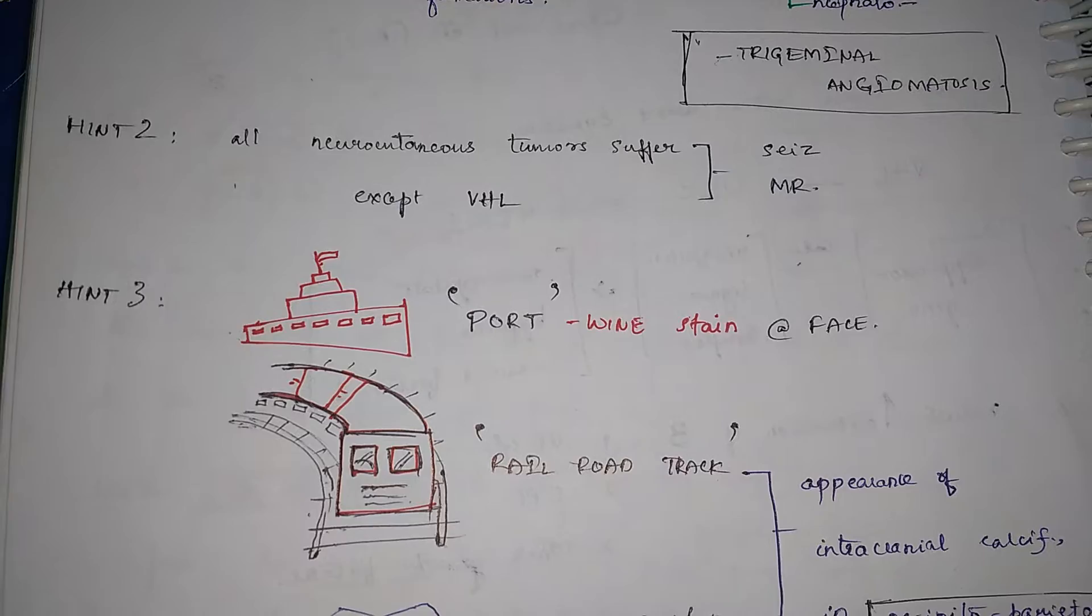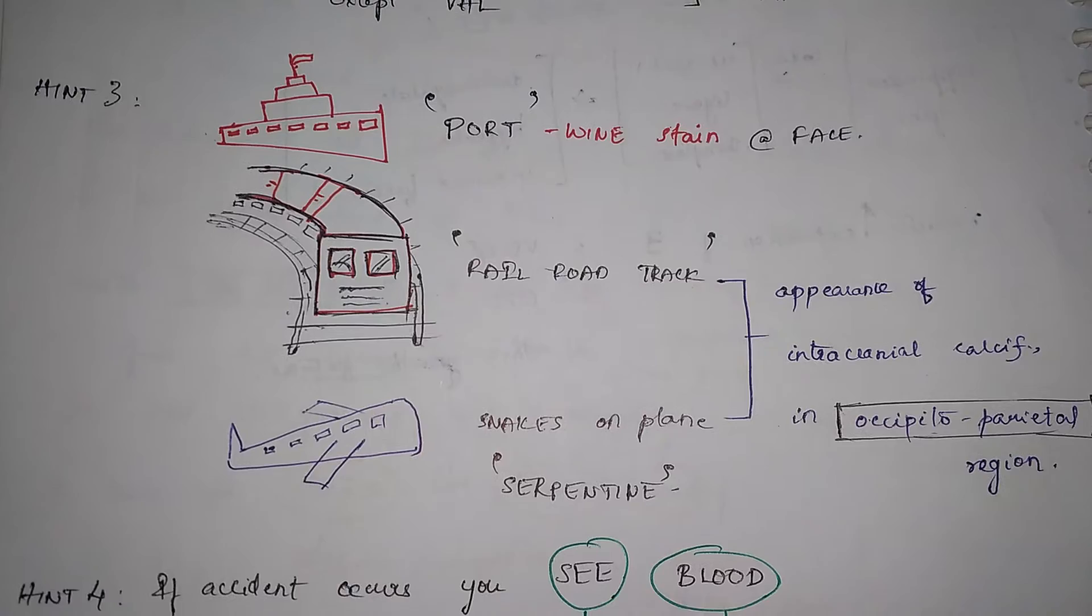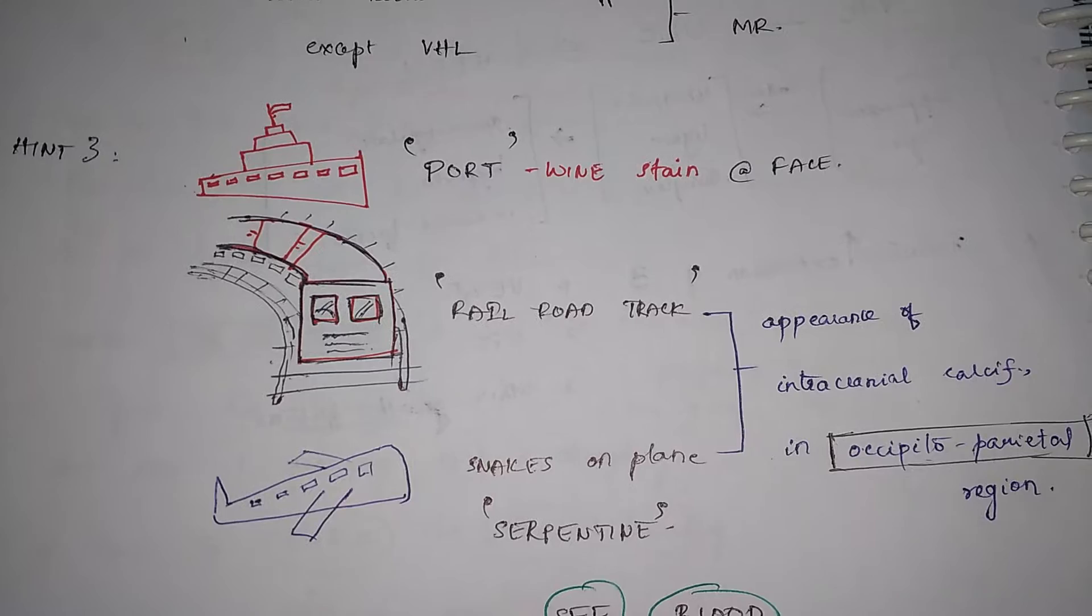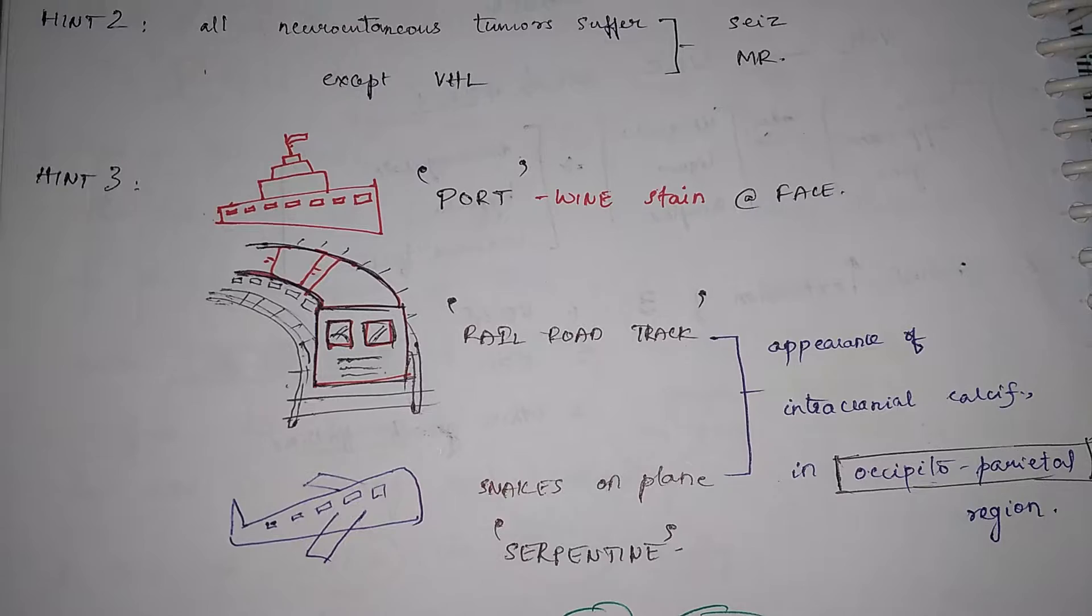So in the clinical features we can have seizure and mental retardation and the other features here we have three means of transport that is a hint three three for three transport methods.